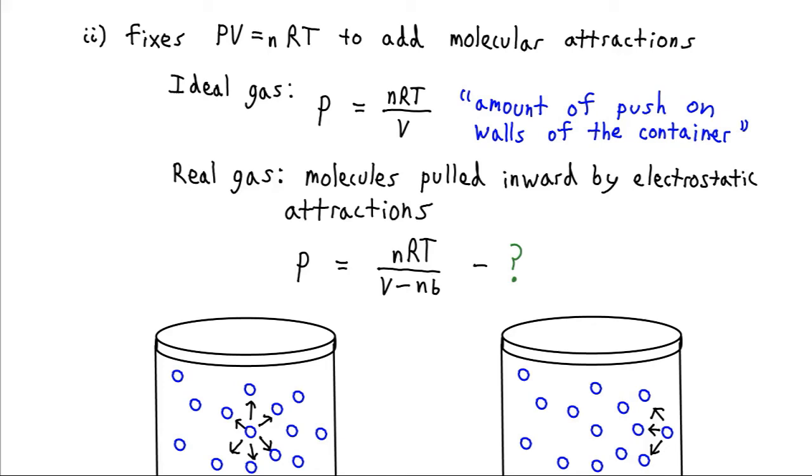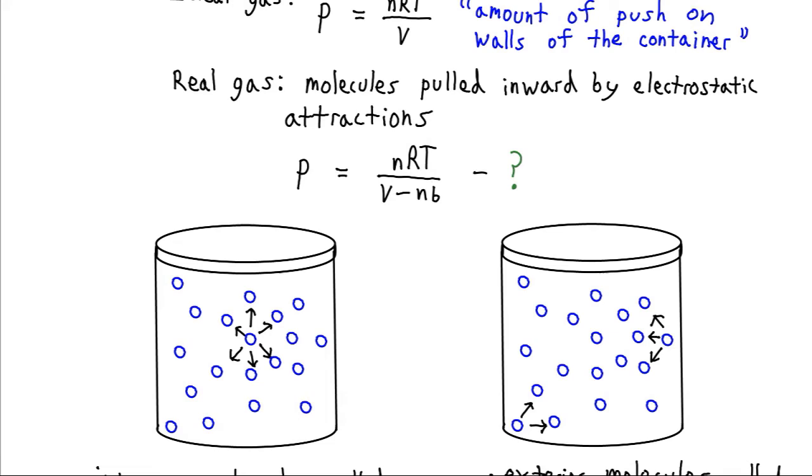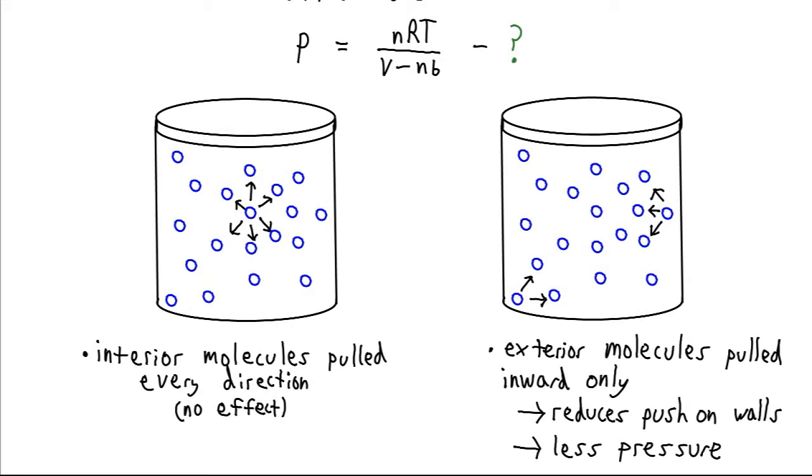Now for a real gas, that pressure is going to be reduced by some quantity by the attraction of the molecules. And here I've replaced V with V minus nB from our previous correction. And so what remains is to figure out how to write this term. To figure out how to write it, let's look at what's happening inside the container.